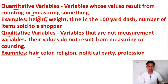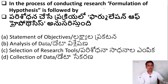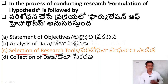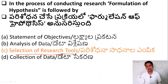Let us move to the next question. In the process of conducting research, formulation of hypothesis is followed by: Option A — statement of objectives; Option B — analysis of data; Option C — selection of research tool; Option D — collection of data. The right answer is Option C: formulation of hypothesis is followed by selection of research tool. Selection of research tool is essential after formulating the hypothesis.